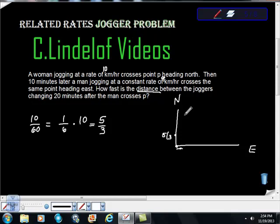So let's put some stuff in that we know already. We know that dy dt, her speed, is 10. We know that dx dt, the eastward progress, is 9 kilometers.